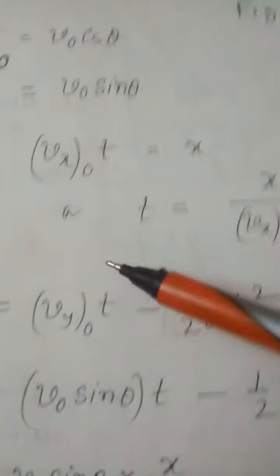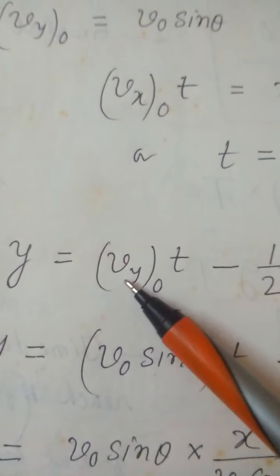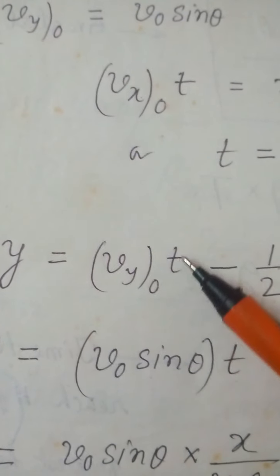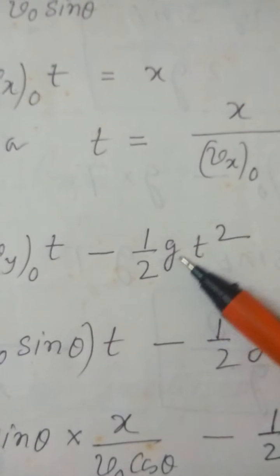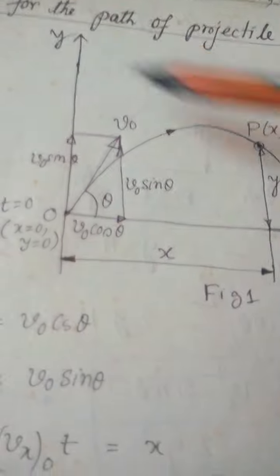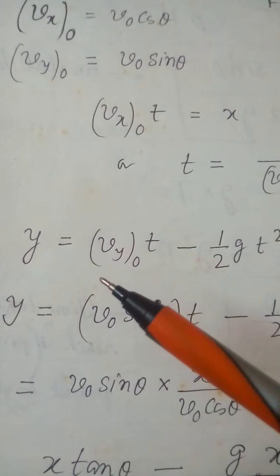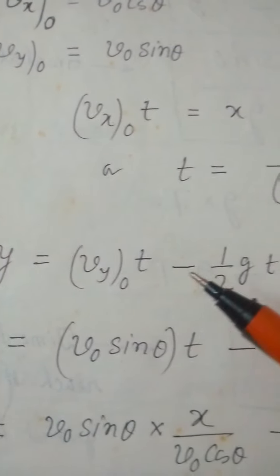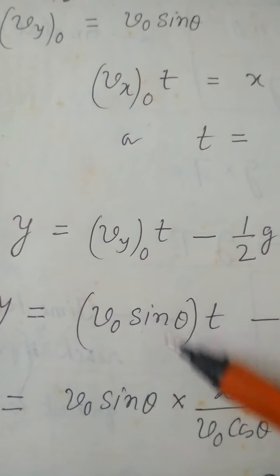For the vertical distance, we use s = ut ± ½ft². The vertical component of initial velocity is vy0 = v0 sin theta, and gravity acts downward, so it is −g in the y-direction. Therefore y = v0 sin theta · t − ½g t².